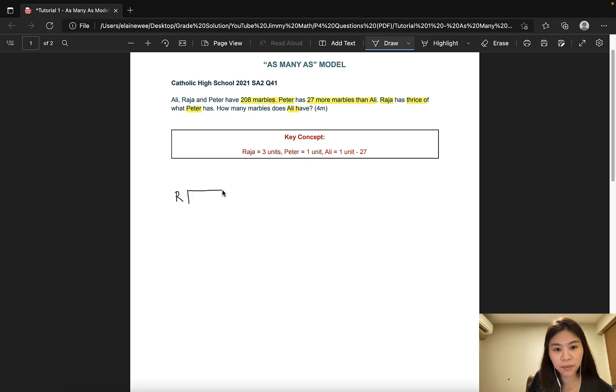Raja would have three units and Peter would have one full unit. And we indicate that this excess part would be 27. And let's go ahead to fill in the other important information, which is the total of 208. And of course, the question mark. How many marbles does Ali have? So the question mark would be here.